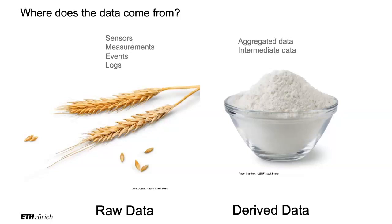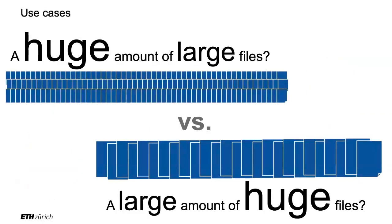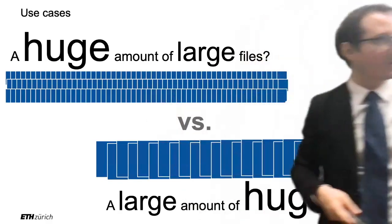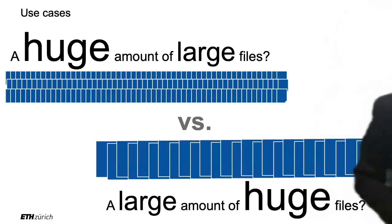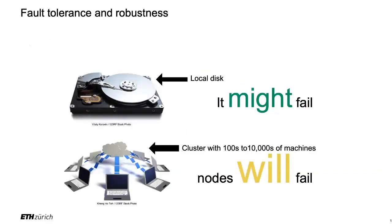The idea is that you read data from cloud storage and write it back to cloud storage. But there's big data in big data. To oversimplify: you can have a huge amount of large files, or you can have a large amount of huge files. And it does make a difference to the architecture you are going to use.